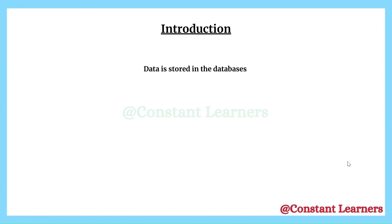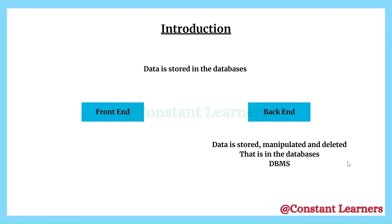We know that data is stored inside databases. We're storing this data so that we can use it in the future. But how exactly does this entire system work? That is, how we create the databases, how we store the data inside the databases, how we can read, change, or delete the data inside the databases. We require two things to perform this task: the front end and the back end. The back end is where the data is stored, where the databases are present. We can store, read, manipulate, or delete the data inside the database. The database management system performs all of these tasks.